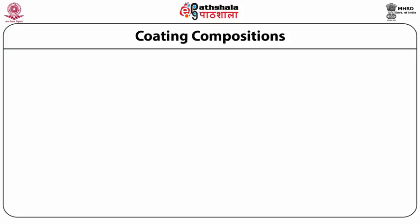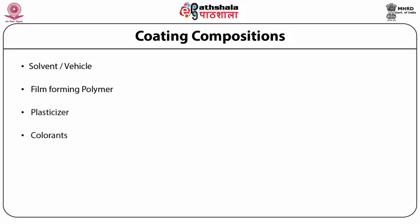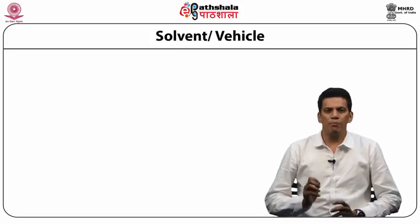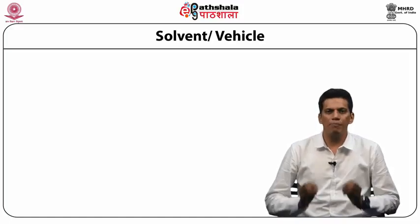The coating may be a physical deposition of material on the tablet substrate or a continuous film with a wide variety of properties depending upon the composition of the coating formulations. A usual coating composition consists of solvent (also called the vehicle), film-forming polymer, plasticizer, colorants, and opacifier/extenders. Let us discuss each component of the coating composition one by one.